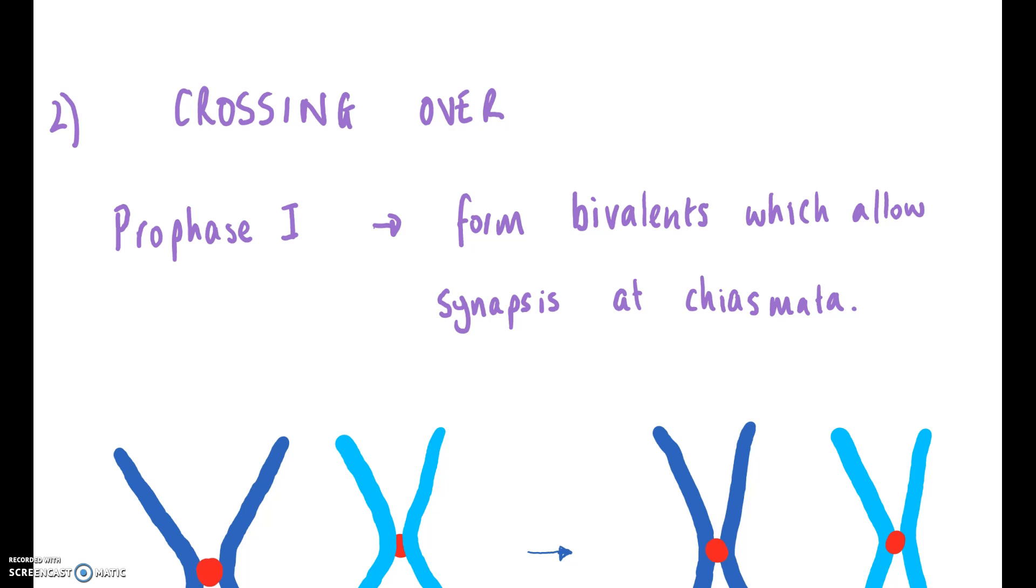Now during prophase one, the homologous pairs of chromosomes can form bivalents, which allow synapsis at chiasmata. Now isn't that a wonderful sentence that doesn't really mean anything, except it obviously means quite a lot. And we're going to look now at what it means and how we can use that to explain how crossing over helps to increase variation.